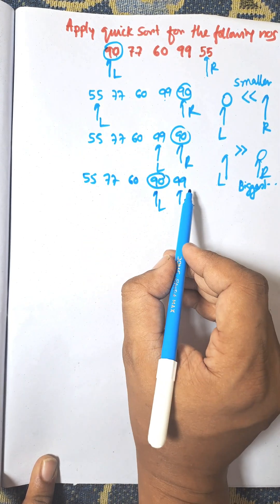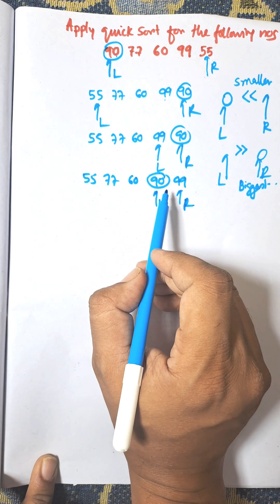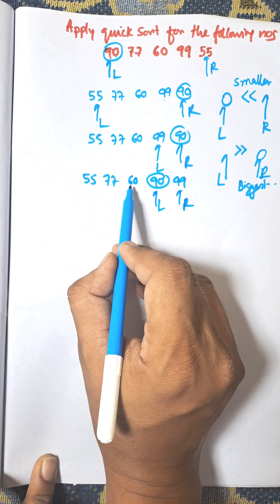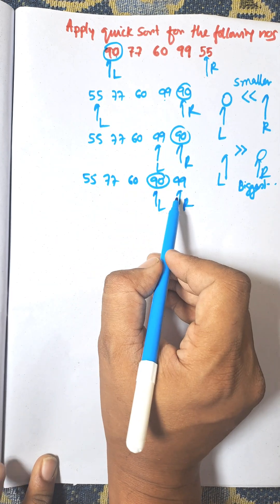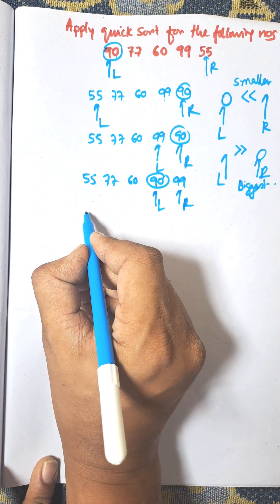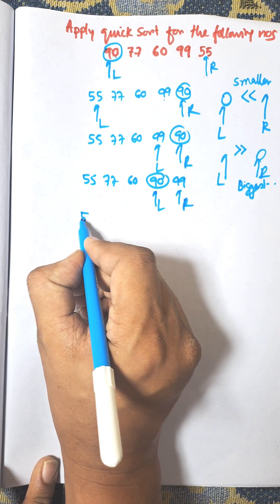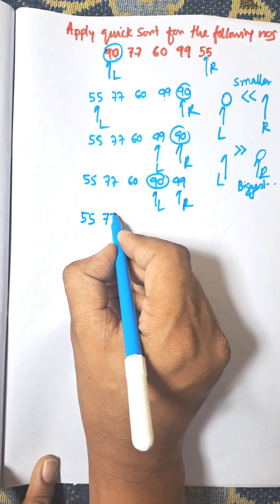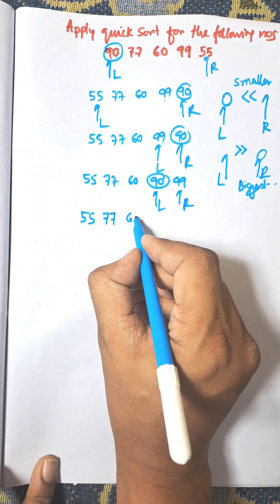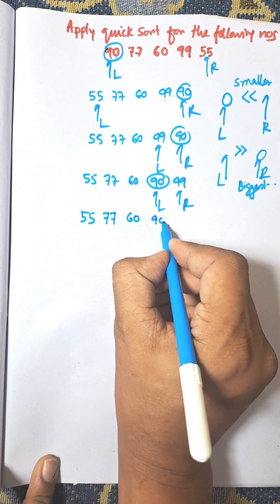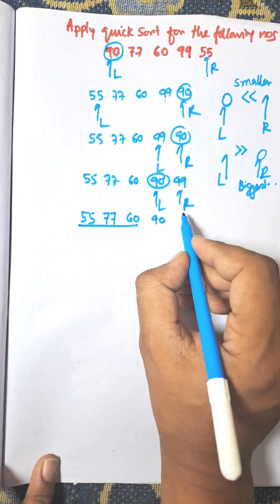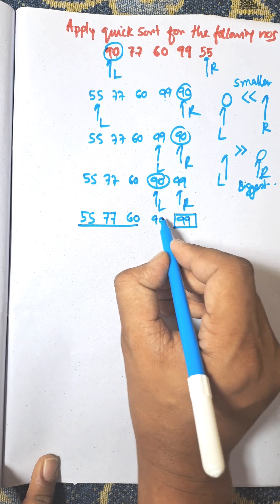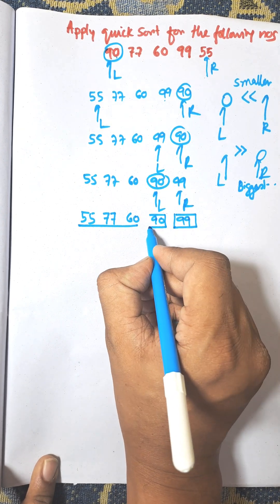Now we search from right to left for an element smaller than 90. The pointers cross each other, meaning the elements are already sorted. There are now two sublists: the first sublist and the second sublist — both are already sorted.